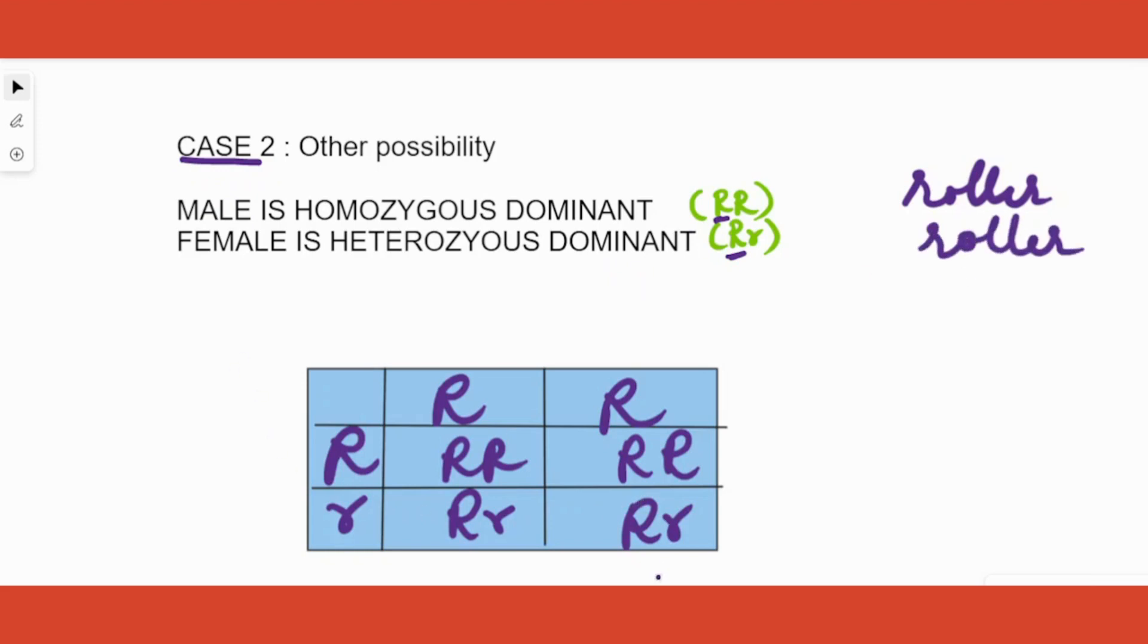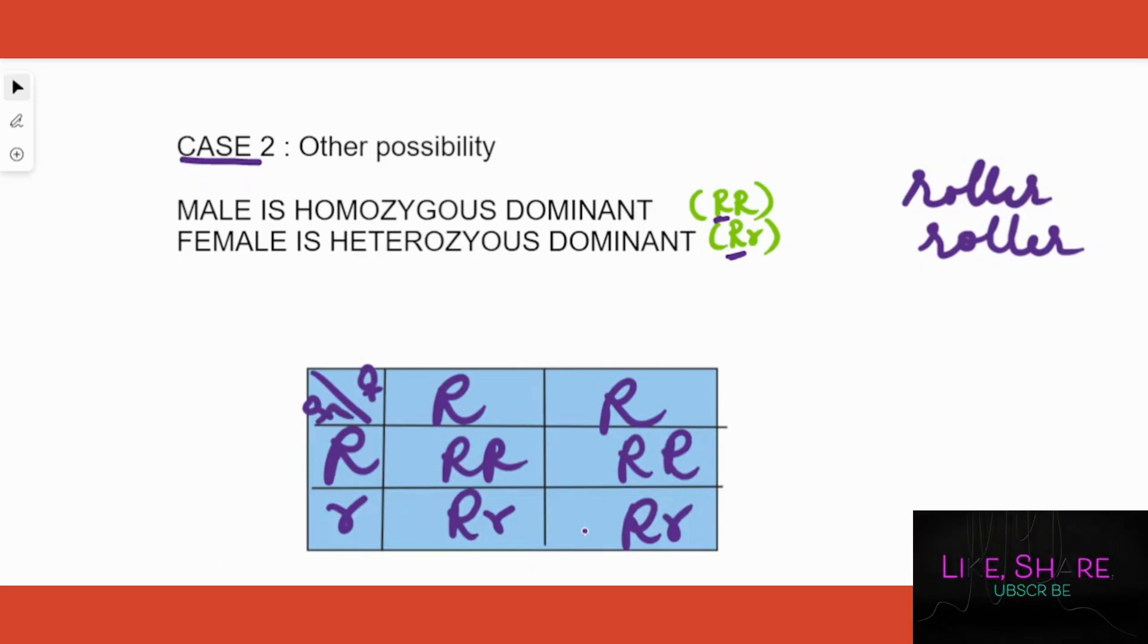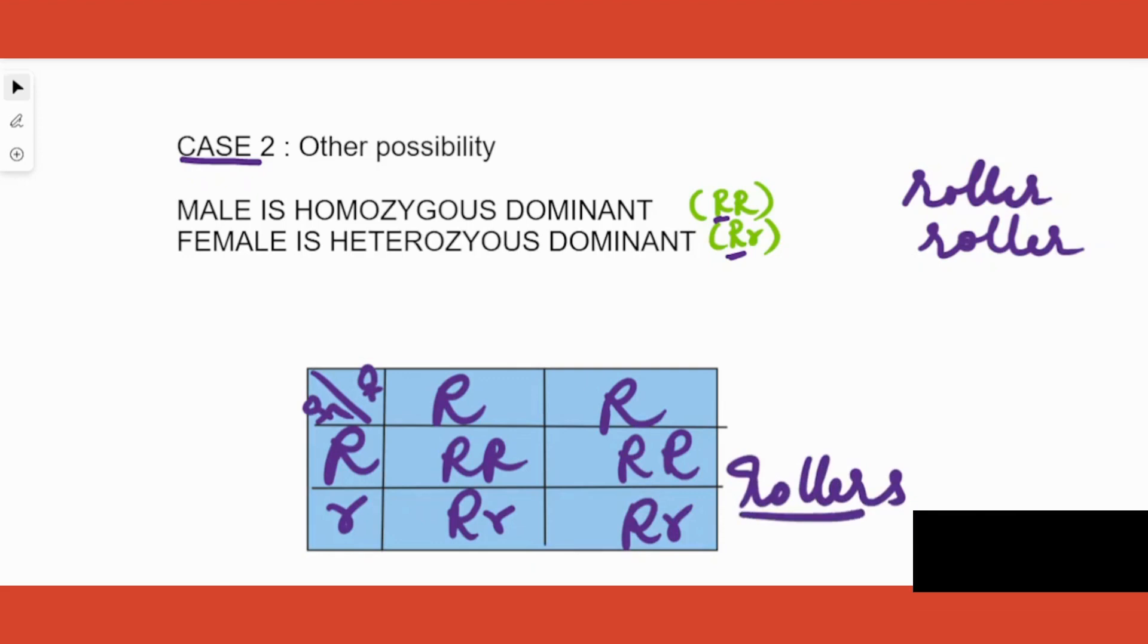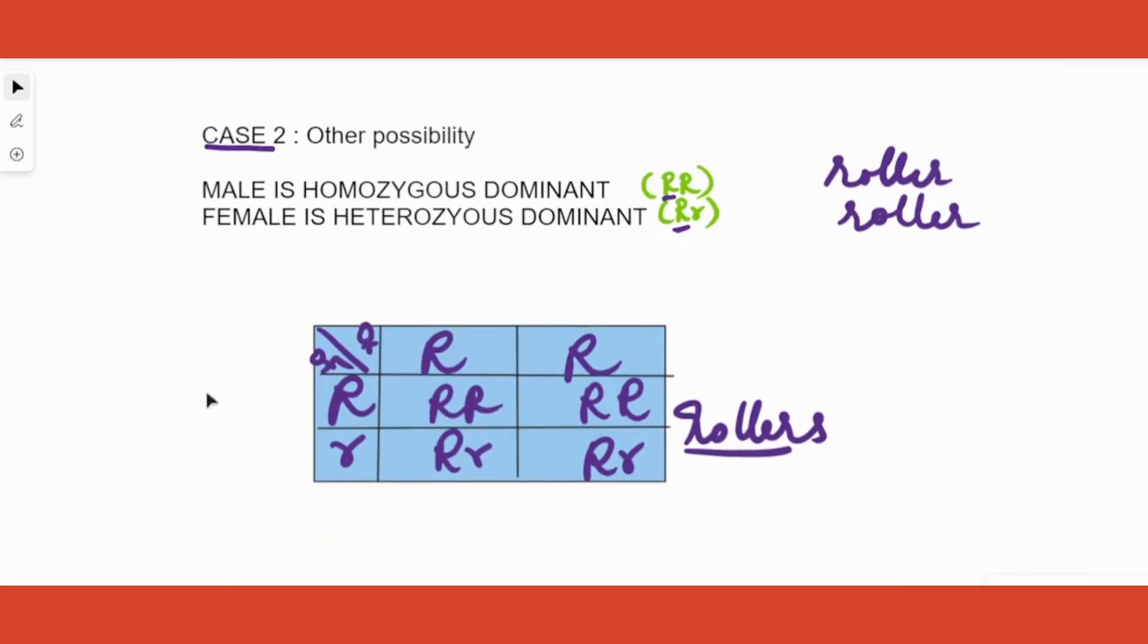For that, what will be the progenies' genotypes? I have already worked it out for you. You can have a look at it and easily tell that all of them are rollers. All of them have the ability to roll their tongue. So hope it is clear to you. In case of any doubts, please connect with me. Thank you.